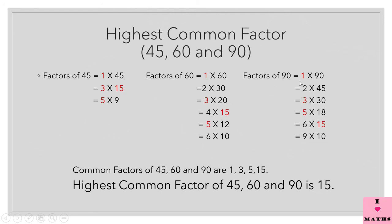Factors of 90: 1 × 90, 2 × 45, 3 × 30, 5 × 18, 6 × 15 and 9 × 10. So 1, 2, 3, 5, 6, 9, 10, 15, 18, 30, 45 and 90 are the factors of 90.